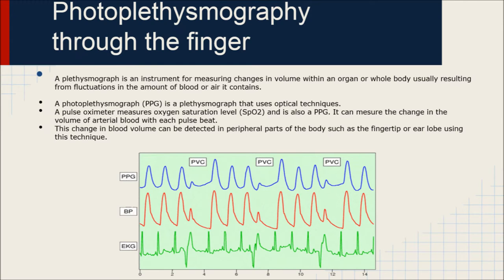A plethysmograph is an instrument for measuring changes in volume within an organ or whole body, usually resulting from fluctuations in the amounts of blood or air it contains.